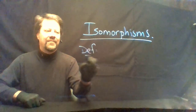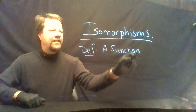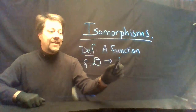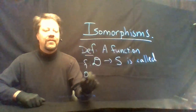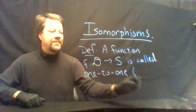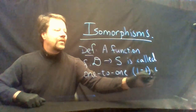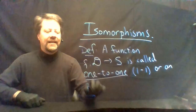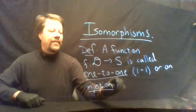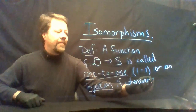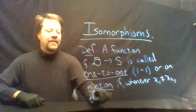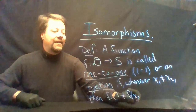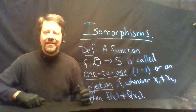First, some definitions. A function f mapping some domain into some set is called one-to-one — sometimes written as 1-1 in parentheses — or also called an injection, if whenever x1 does not equal x2, then f of x1 does not equal f of x2. So different domain elements map to different range elements.